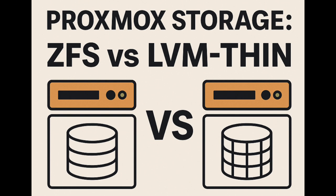The broader Linux consensus lines up quite consistently. ZFS is almost universally acknowledged as unbeatable for its data integrity features and advanced toolkit. LVM Thin, meanwhile, is respected for offering simpler, often faster storage, especially with lower hardware demands. Benchmarks from sources like Phoronix show ZFS excels at sequential workloads — writing big files, reading large chunks — but can sometimes introduce a performance hit with heavy random I/O, the kind VMs often do, particularly on consumer SSDs. LVM Thin tends to perform more predictably across different workloads, and is often seen as the better default for smaller servers and simpler deployments where you don't need all the ZFS bells and whistles or can't afford the RAM overhead.